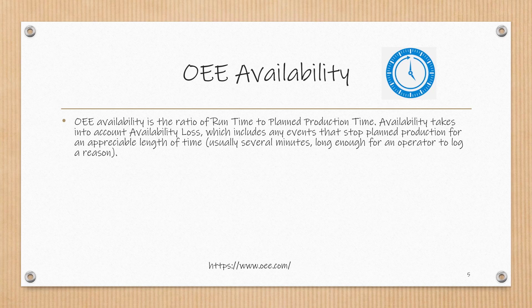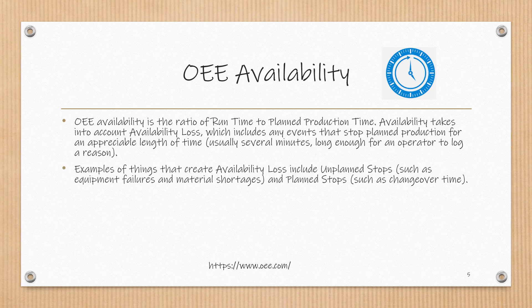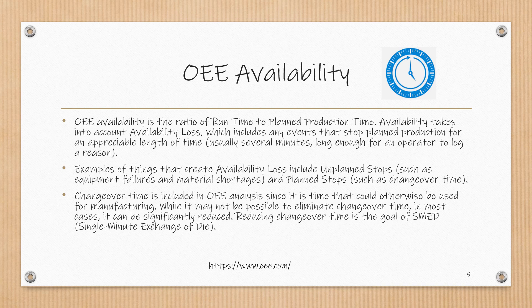OEE availability is the ratio of runtime to planned production time. Availability takes into account availability loss, which includes any events that stop planned production for an appreciable length of time, usually several minutes or long enough for an operator to log a reason. Examples include unplanned stops such as equipment failures and material shortages, and planned stops such as changeover time. Changeover time is included in OEE analysis since it is time that could otherwise be used for manufacturing. Reducing changeover time is the goal of SMED, or Single Minute Exchange of Die. The remaining time after availability loss is subtracted is called runtime.